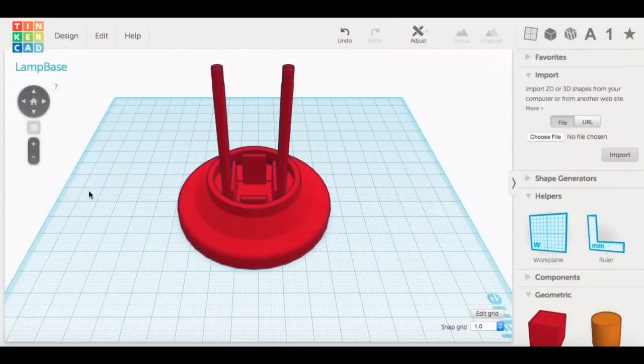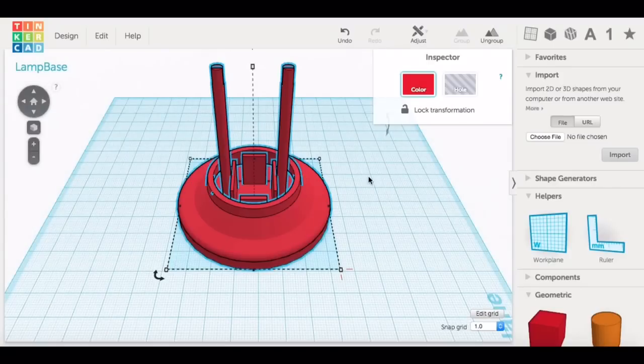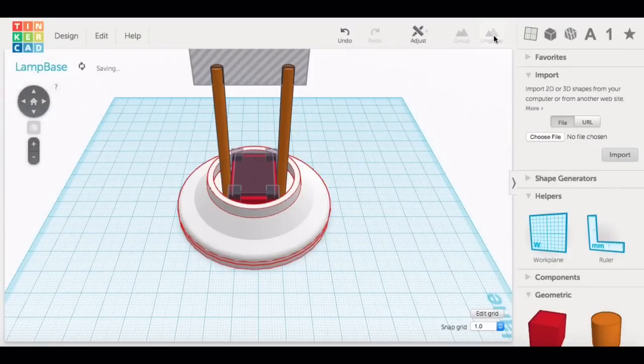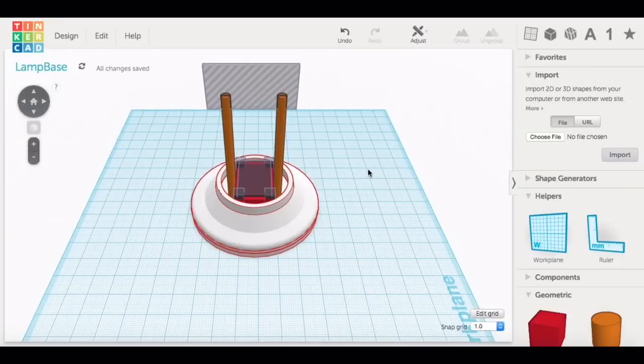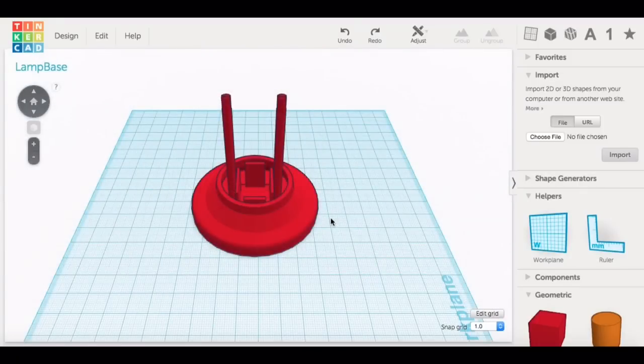Now I did modify the base. I put a bottom on it and then I added these posts and then like a little box area to hold the 9 volt battery. So let me click on group so you can just see what I did. It's really simple. Just two posts and I put a slot at the top to hold the LEDs and then just a bunch of box elements to form the clips to hold the battery in place.